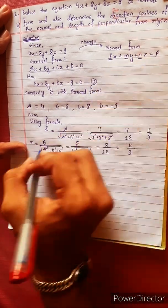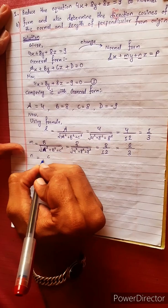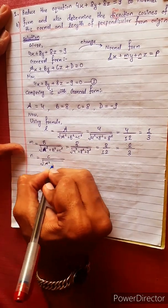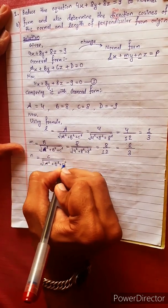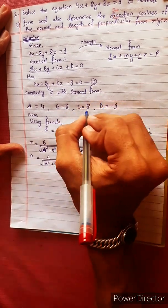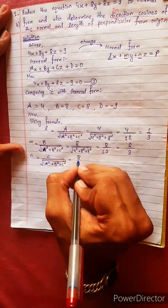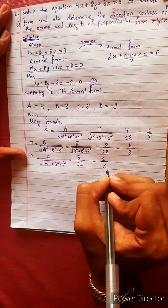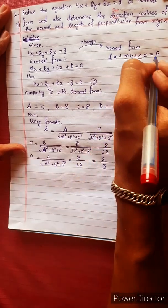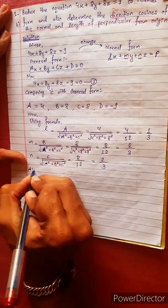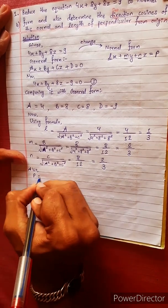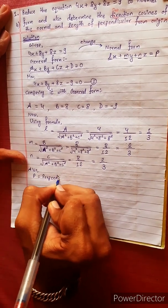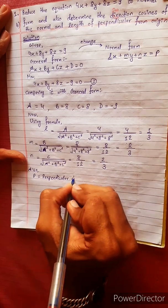n = c divided by √(a² + b² + c²) = 8 divided by √(4² + 8² + 8²) = 8/12 = 2/3. Also, p equals the perpendicular distance.